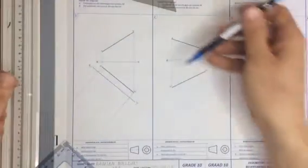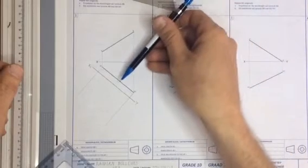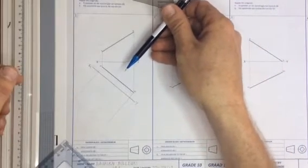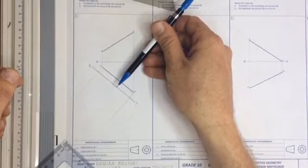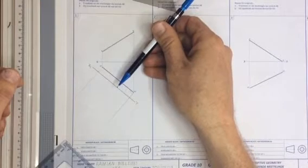Reason being is that I'm now going to look at this line at 90 degrees. I know that if I'm looking at a line at 90 degrees, I'm then seeing a true length.